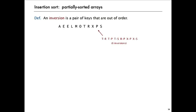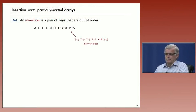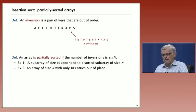An inversion is just a pair of keys that are out of order in the array. So this array has six inversions. T and R are out of order because R should go before T. T and P are out of order and so forth. This array has six inversions. And we define an array to be partially sorted if its number of inversions is linear. If it's less than some constant times N.